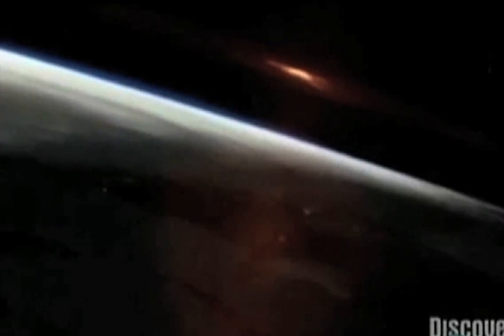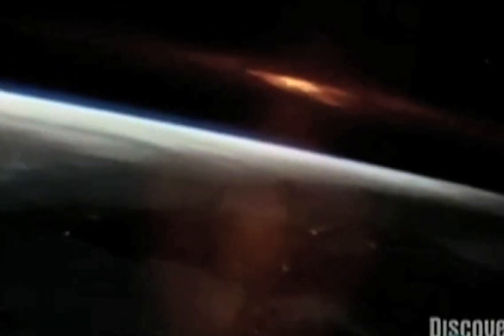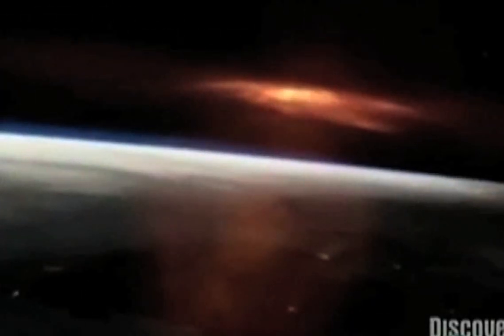The solar flare ejected a plasma cloud that traveled from the surface of the sun for just over 18 hours before finally reaching the Earth. As the dawn broke on the 1st of September 1859, the skies all over planet Earth erupted in red, green, and purple lights.